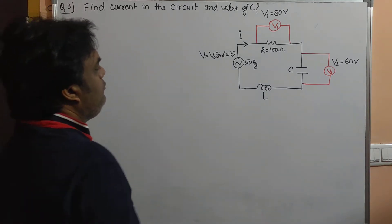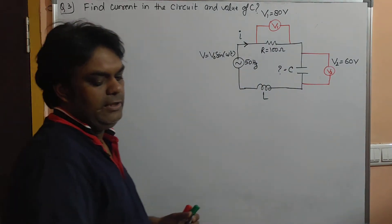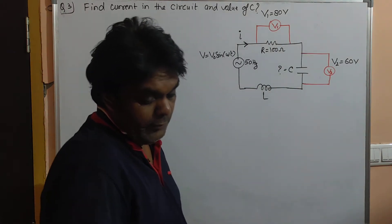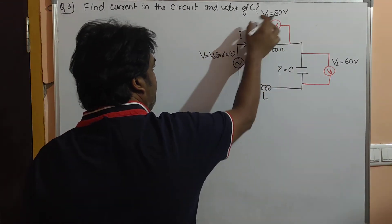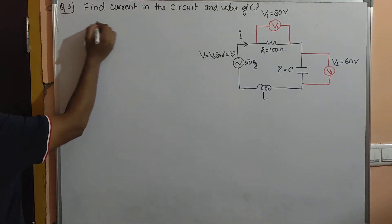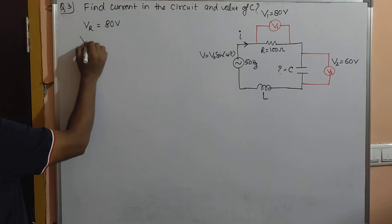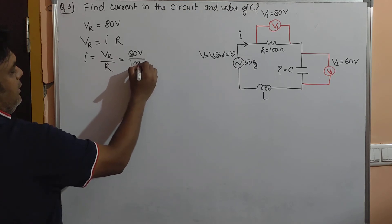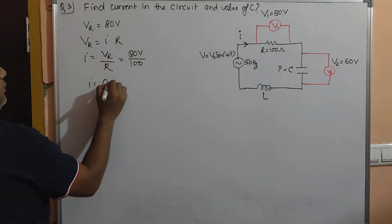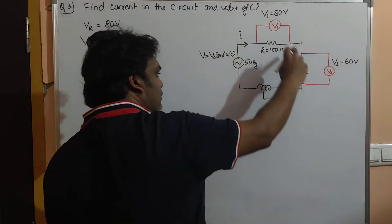As you know, in case of a resistor, the current and voltage are in same phase. For calculating the current, Vᵣ is given as 80 volts. This Vᵣ equals I into R, so I equals Vᵣ by R, which is 80 volts divided by 100. Therefore, I is 0.8 amperes. Current in the circuit is known because the same amount of current will flow in all three components since they are in series. It is a series LCR circuit.